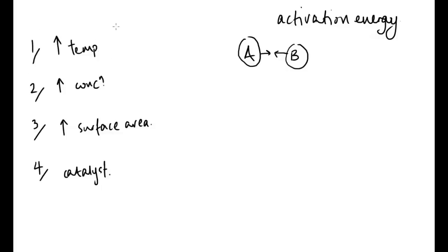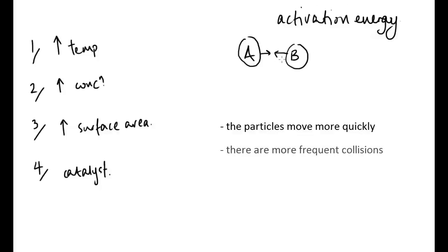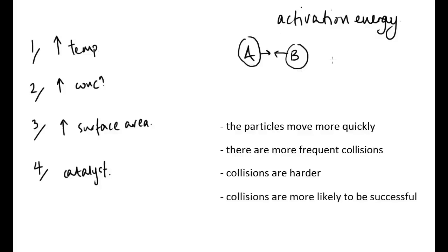When we increase the temperature, we increase the kinetic energy of the particles — they move quicker. Because they are moving quicker within their container, they are more likely to collide, and the collisions will be more frequent. Also, because they are moving faster, every time they collide the collision is harder. Because the collision is harder, it's more likely to meet the activation energy, and therefore the reaction is more likely to be successful — increasing the rate of the reaction.